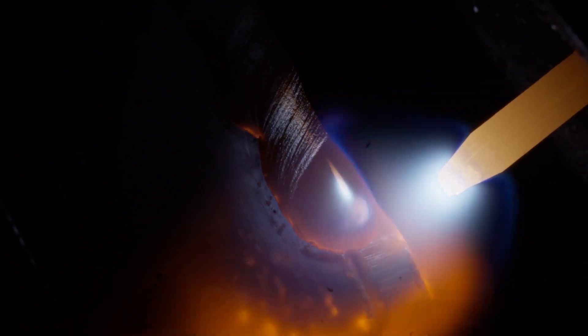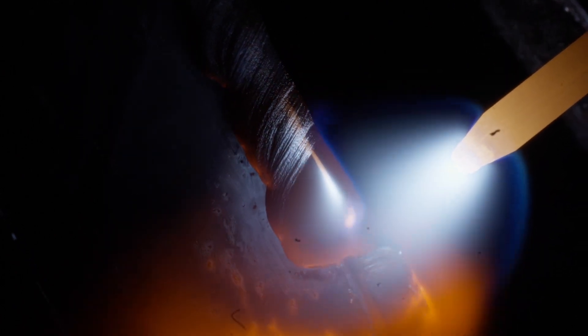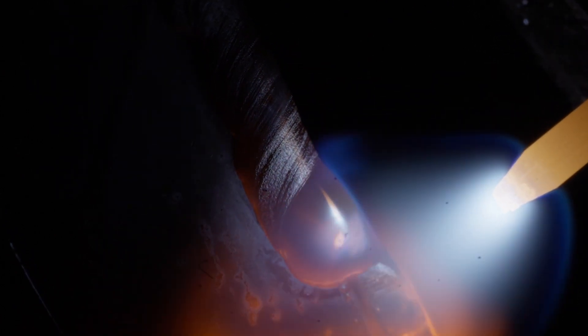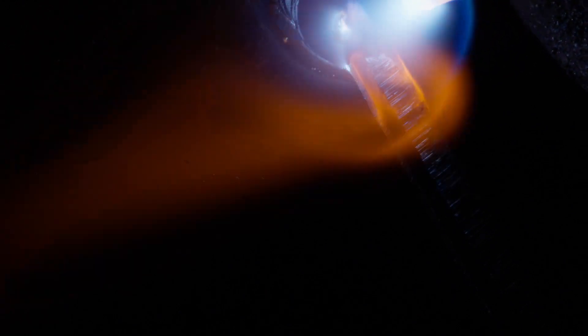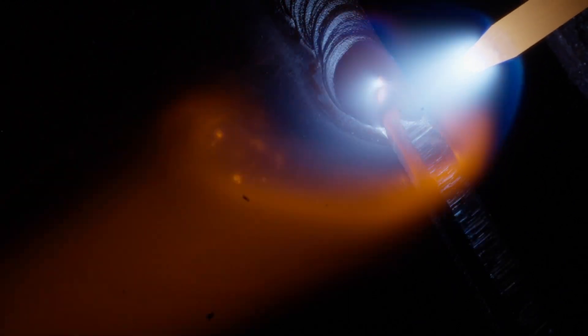You can also start to see the tungsten, the glowing orange rod in the top right corner is starting to degrade if you look at the tip of it. So I'm overheating that tungsten because it shouldn't be degrading this quickly.